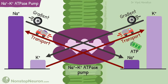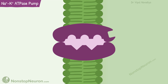For this active transport, it needs energy, and the source of energy is mentioned in the name itself — it's ATP. Active transport using ATP directly is called primary active transport. Thus, this transporter carries out primary active transport of sodium and potassium. It has three sites for sodium binding, two for potassium, and one for ATP.